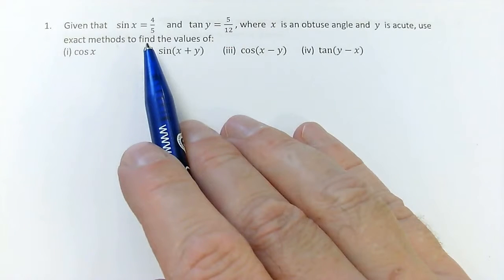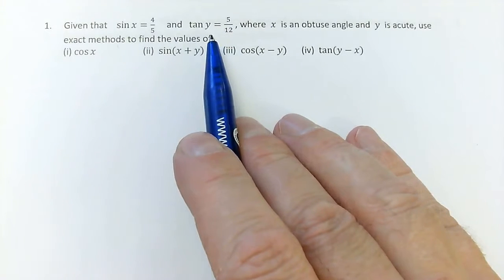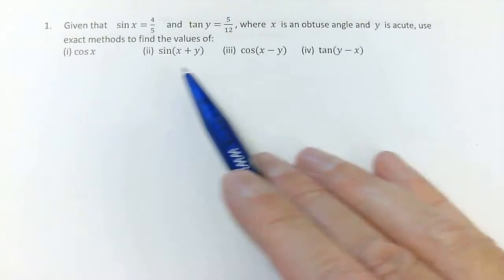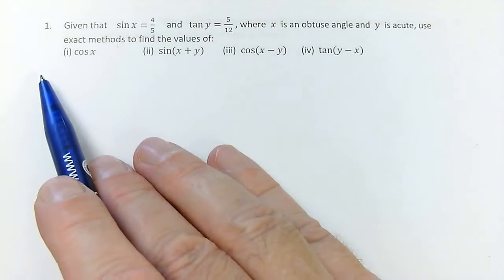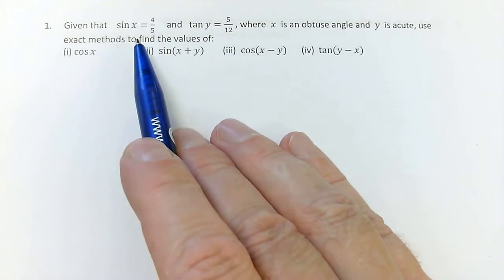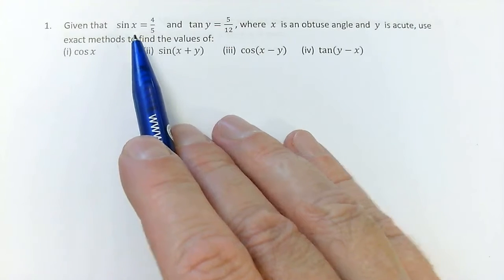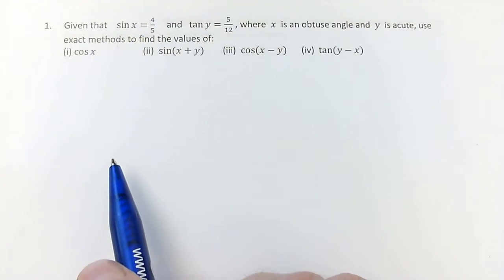Okay, so we have the value of sine x and tan y, and we want to find out all other kinds of trig ratios, starting with cos x. In fact, the first thing I need to do is work from sine x and tan y to find the other basic trig ratios of sine of x and y.